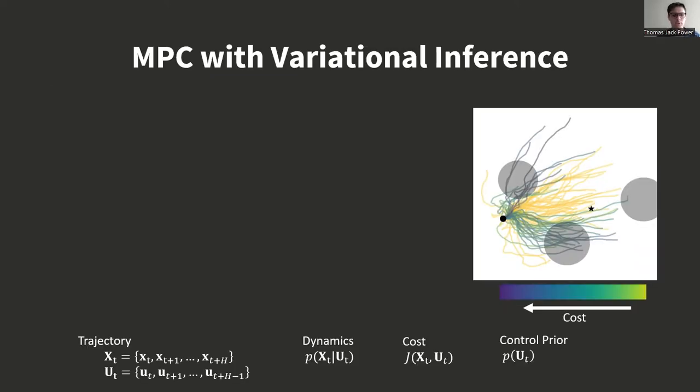How should we train this sampling distribution? Intuitively, we want a sampling distribution where the likelihood of a sample is related to its cost while maintaining diversity. We formalize this as Bayesian model predictive control.